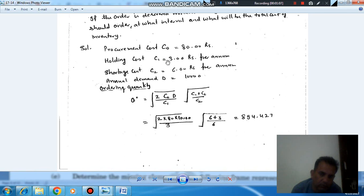And from the standard formula of economic order quantity with shortage, Q is Rs. 2 C-not D by C-1 multiplied by C-1 plus C-2 by C-2. So, C-2 is the shortage cost. Shortage cost means how much the company will lose if one item is Rs. 4 per annum, that is its shortage cost.